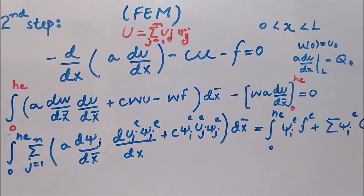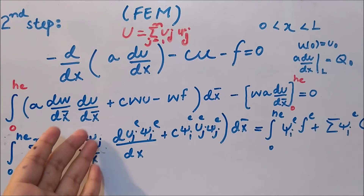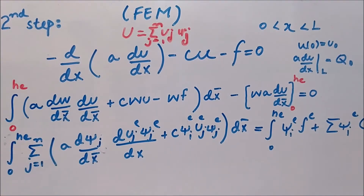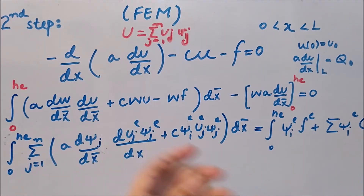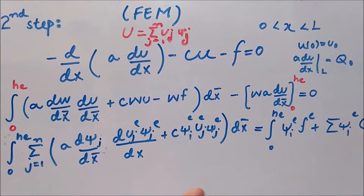It is very important to understand what w represents. The shape function tells us about the variation of a quantity. If a node is fixed at some point — whether the displacement value is 0, 2, or 3 — the value is fixed, and therefore the variation w, which represents that change, equals zero at a fixed node.